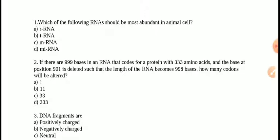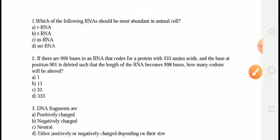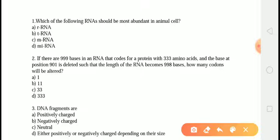The very first question is: which of the following RNA should be the most abundant in animal cells? The correct answer is answer number 1, that is rRNA. Ribosomal RNA is the most abundant of all types of RNA, comprising 70–88%. The percentage of tRNA and mRNA is 15% and 2–5% respectively. Therefore, rRNA is the most abundant one.